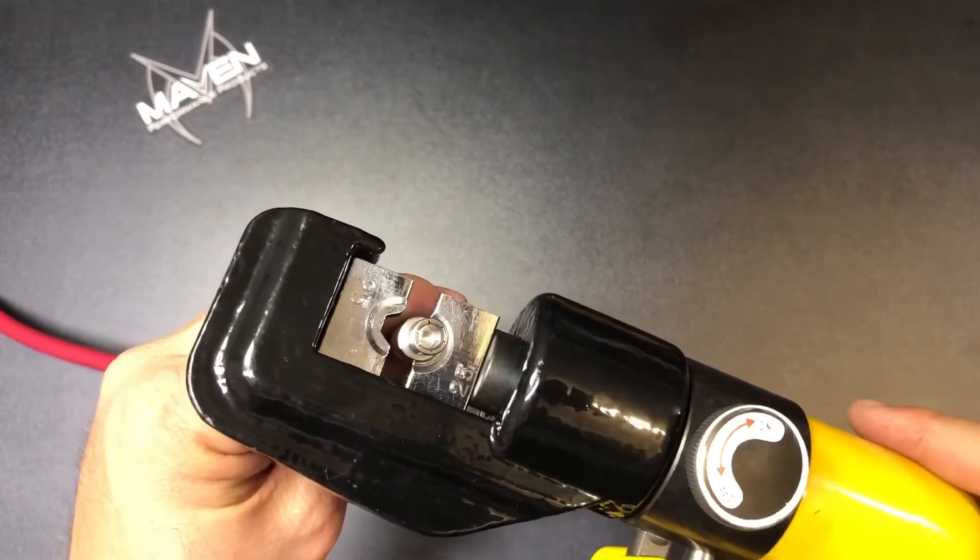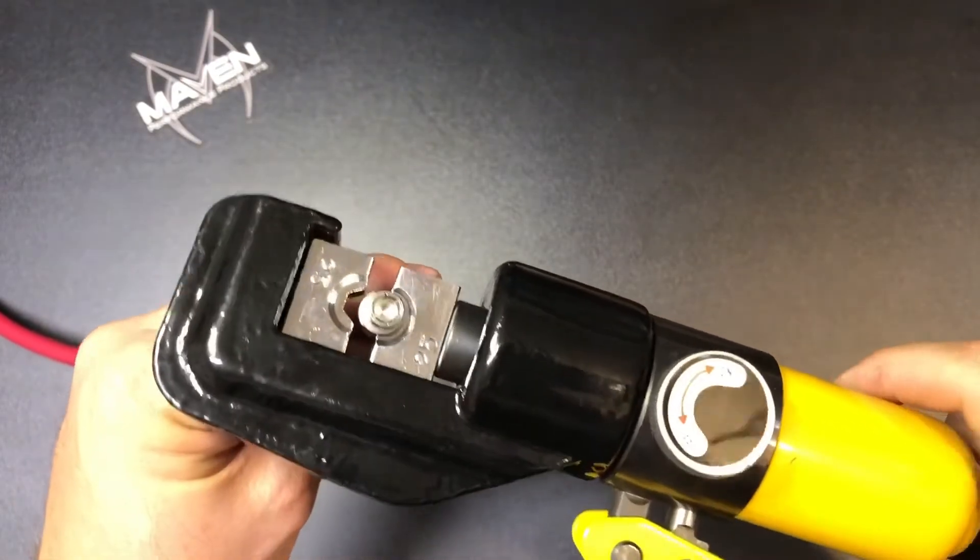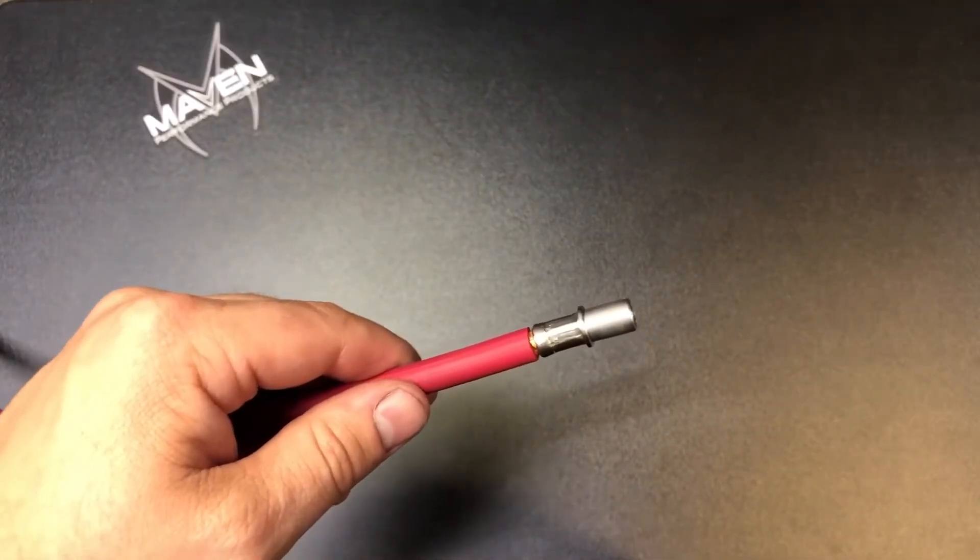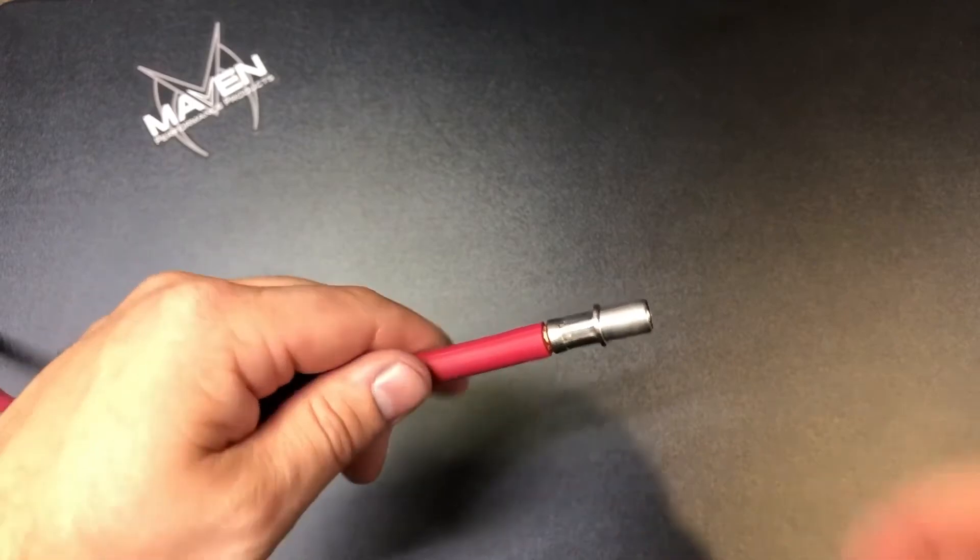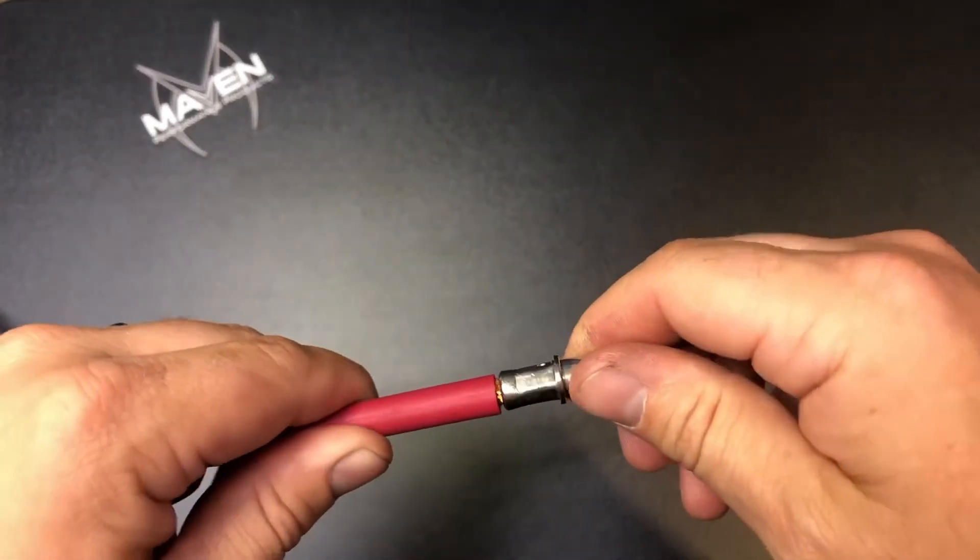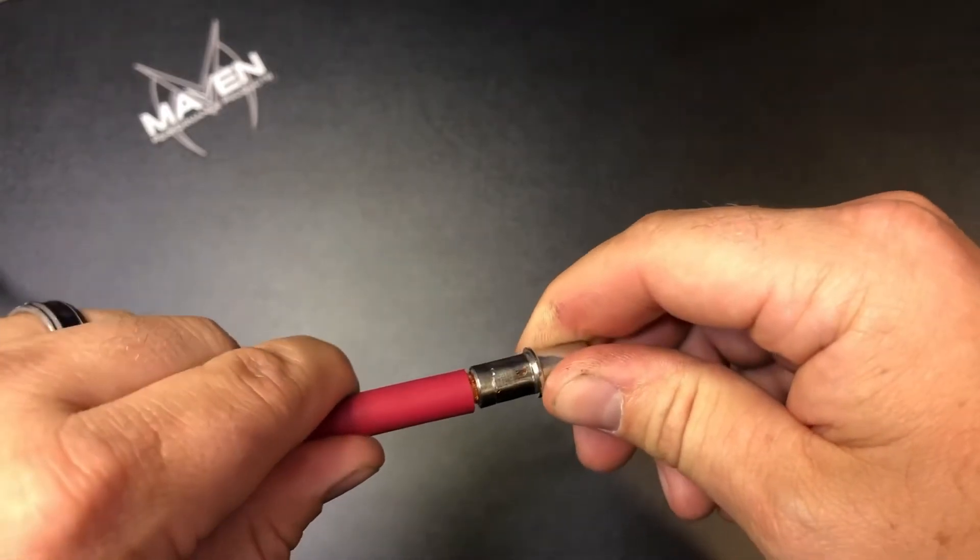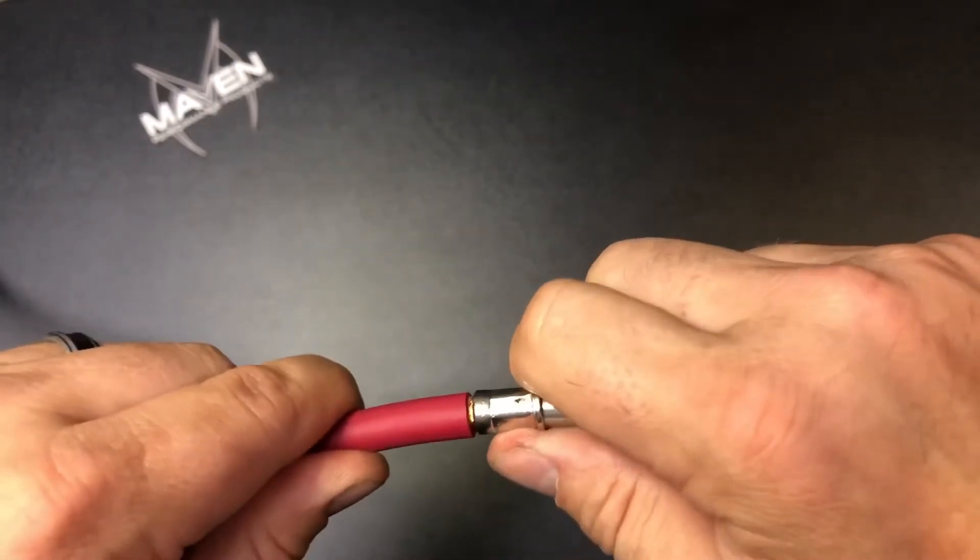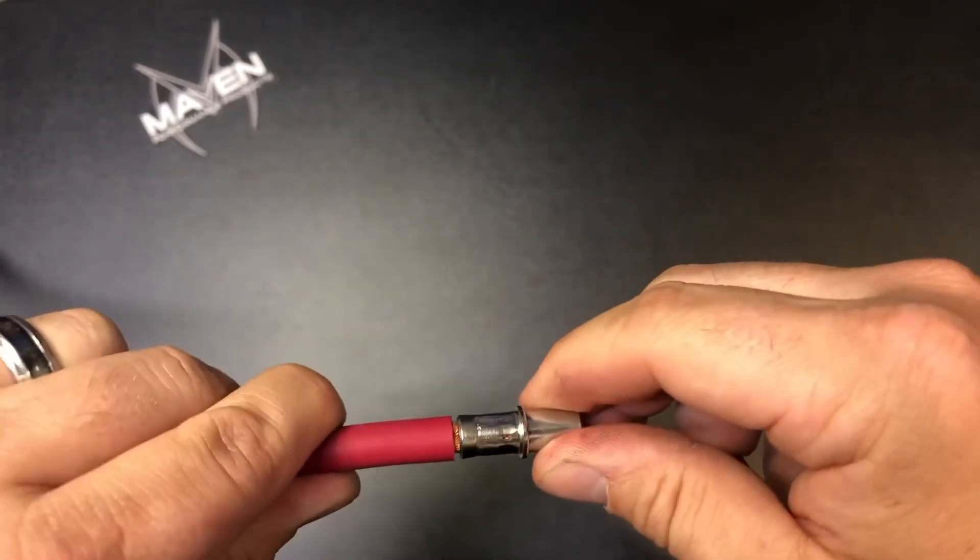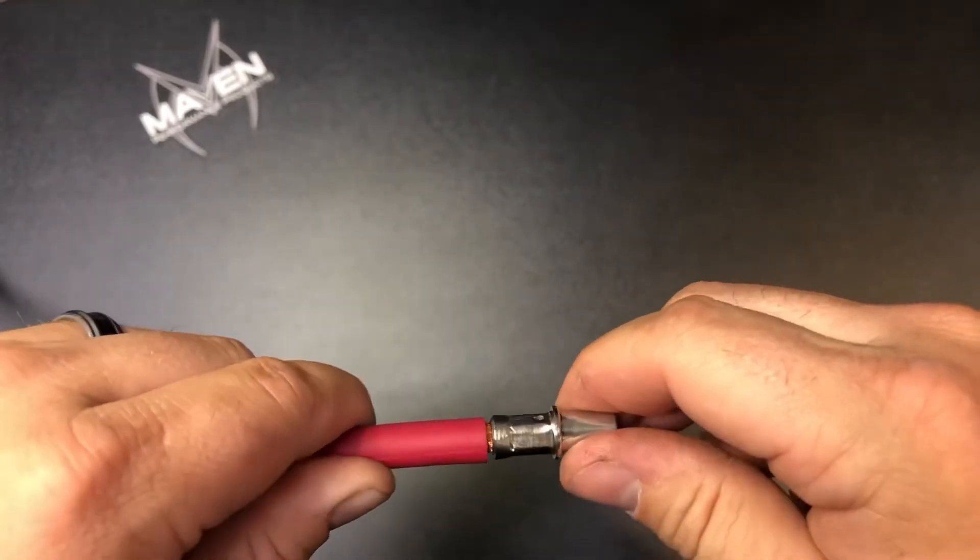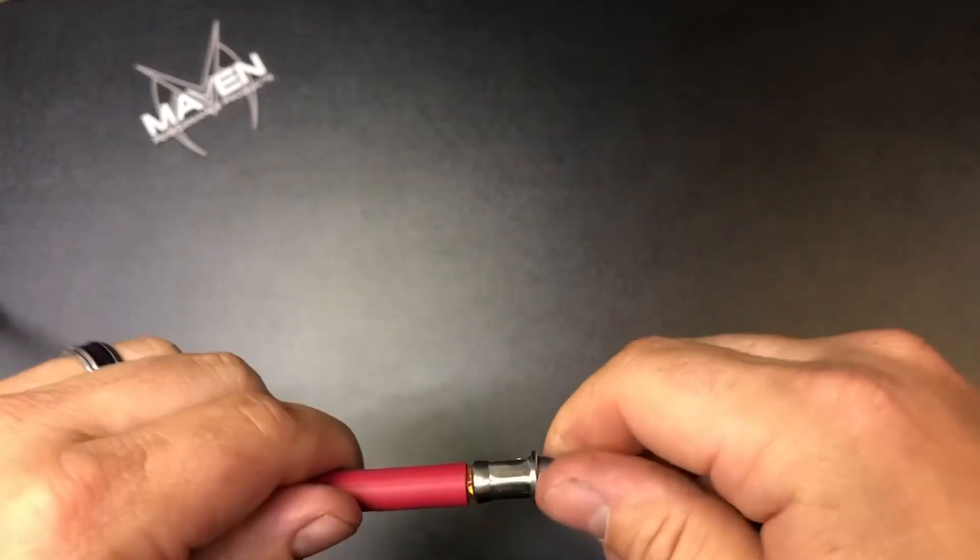After you crimp it, you'll crimp it all the way down till basically the dies bottom out and you can't go anymore. This is what you'll end up with. Of course, it's a hex—you got six sides. You'll see that little inspection hole with all the conductors in there. It's on there. Give it a good tug test to make sure you've got it in there good. So far it's been very successful on a cheap set of crimpers, so give it a go.